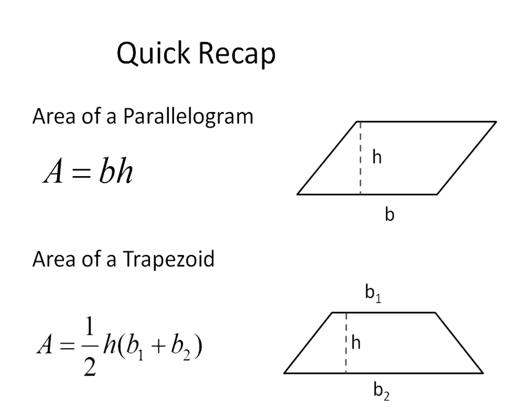So just a quick recap on everything we've talked about. The area of a parallelogram is the base times the height, where the base is the bottom and the height is the perpendicular distance from top to bottom. The area of the trapezoid is one half of the height times base 1 plus base 2, where the height is perpendicular, base 1 is usually on top and base 2 on the bottom. But because you're adding them, you can interchange which is base 1 and base 2 and it won't make any difference.